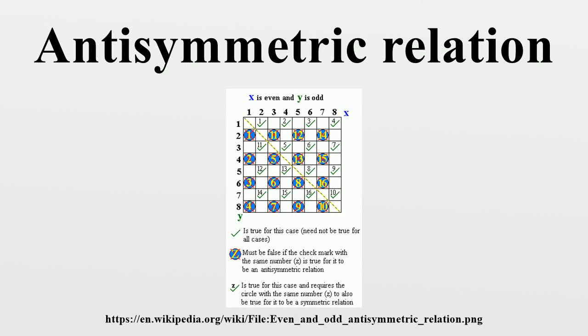In mathematics, a binary relation R on a set X is antisymmetric if there is no pair of distinct elements of X each of which is related by R to the other.